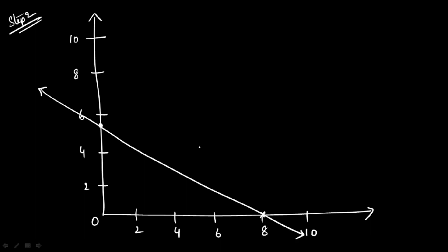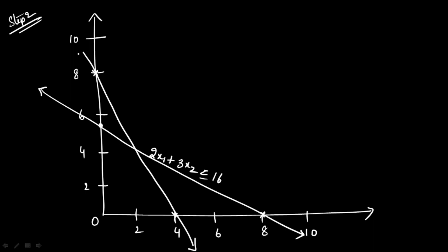This line represents the first constraint: 2x1 plus 3x2 less than or equal to 16. Moving to the second constraint, we have (0, 8) up here and (4, 0) on the x-axis. Drawing that line — this represents 4x1 plus 2x2 less than or equal to 16.